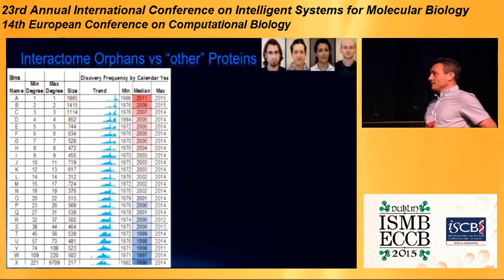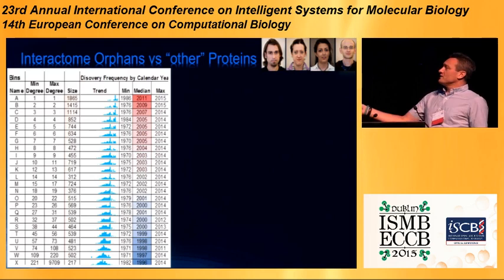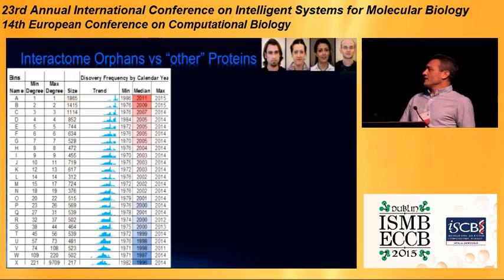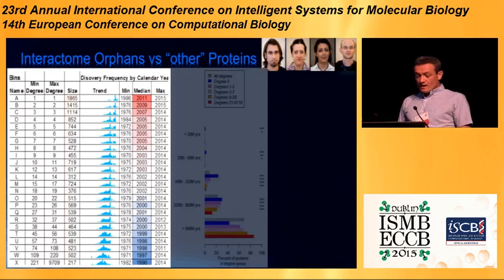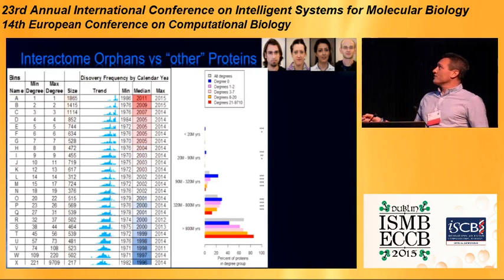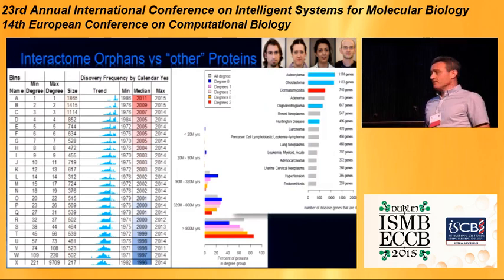Grouping proteins by degree into bins of roughly similar size, and looking at discovery frequency from the 1970s until now, shows that low-degree proteins are mostly discovered more recently. Some outliers from the past are not studied regardless of available information — for example, due to lack of good antibodies or proteins being long and difficult. Low-degree proteins are significantly enriched for recent and mammalian-specific proteins, which means orthologous predictions won't help here. And since many of these proteins are related to disease, we do have to study them.